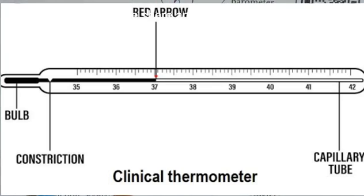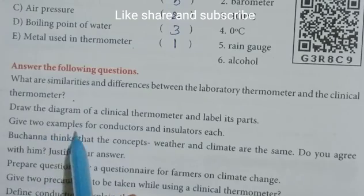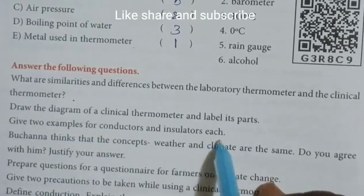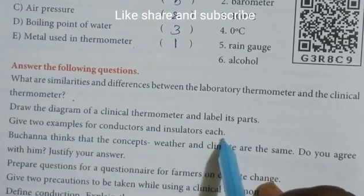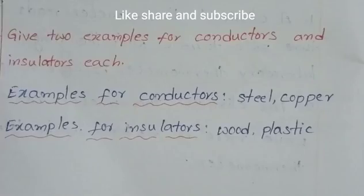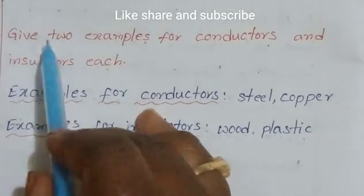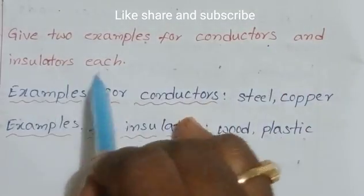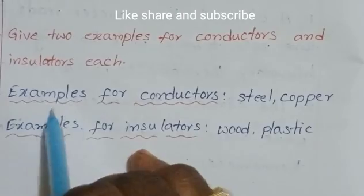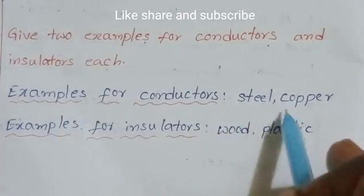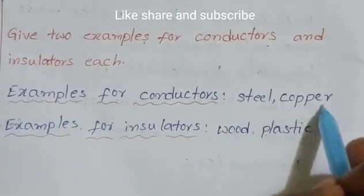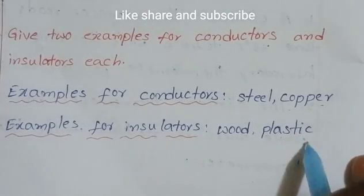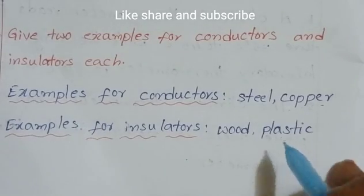Third question: give two examples for conductors and insulators each. Examples for conductors: steel and copper. Examples for insulators: wood and plastic.